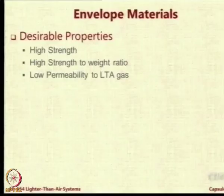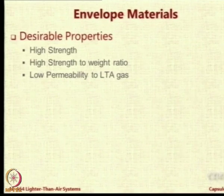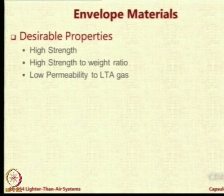A major task of the envelope is to contain the lighter-than-air gas inside, so gas permeability is very important. Permeability needs to be good for hydrogen or helium or both, depending on which gas is planned to be used. For passenger-carrying airships, legal requirements prohibit hydrogen, so helium permeability is the prime requirement. In remotely controlled or unmanned airships and aerostats, hydrogen or helium may be deployed depending on the application.